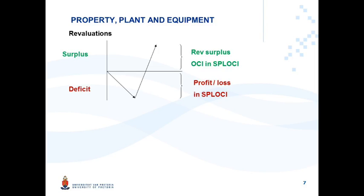Very important: with transactions like this, you need to keep track of the balance on your revaluation surplus account so that you can recognize subsequent deficits first against the surplus before taking it to profit or loss. Similarly, you must keep track of all previous deficits — since deficits are recognized in profit or loss as an expense, they don't accumulate in an account. You need to track those previous deficits so that a subsequent surplus can first reverse them before you move into OCI.